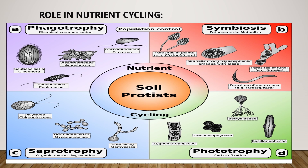Role in nutrient cycles: protists are involved in decomposition and contribute to nutrient cycling by decomposing organic matter. Protists like amoeba and flagellates break down dead organic materials, releasing nutrients such as nitrogen, phosphorus, and carbon back into the environment. Some nitrogen-fixing protists convert atmospheric nitrogen into a form usable by plants, contributing to soil fertility and nutrient availability.